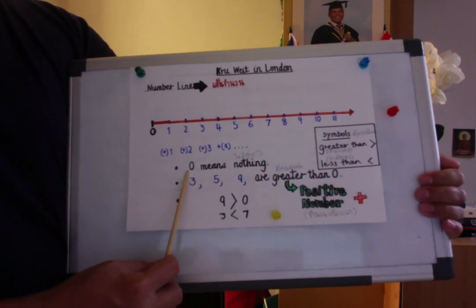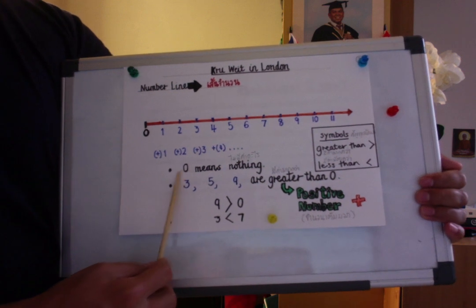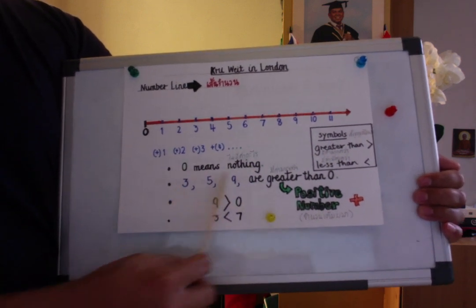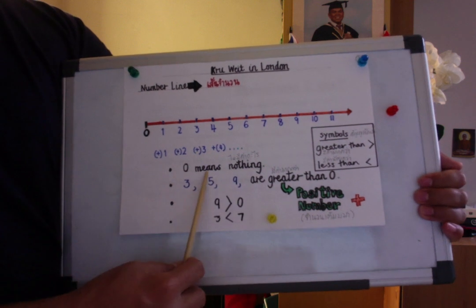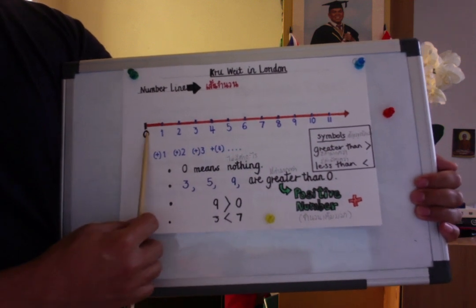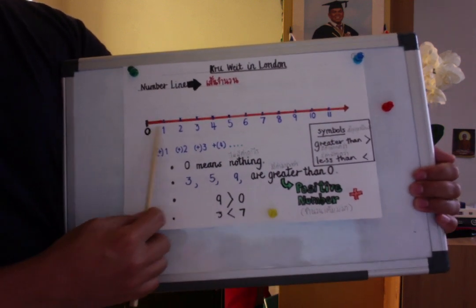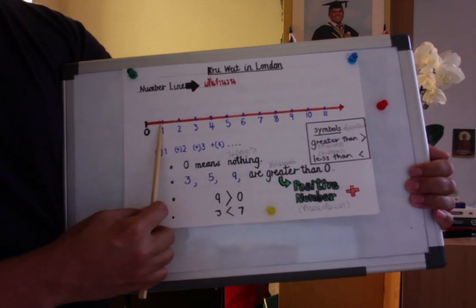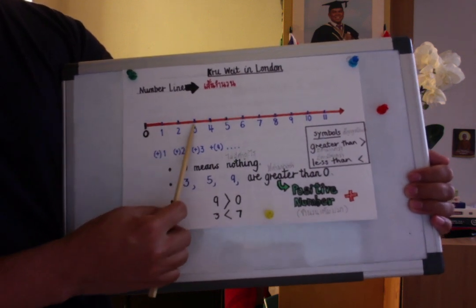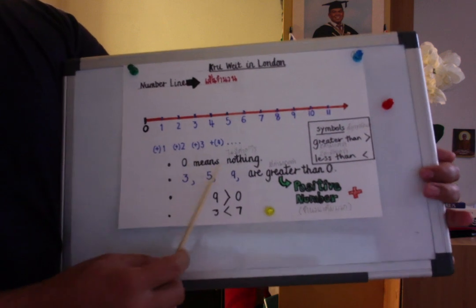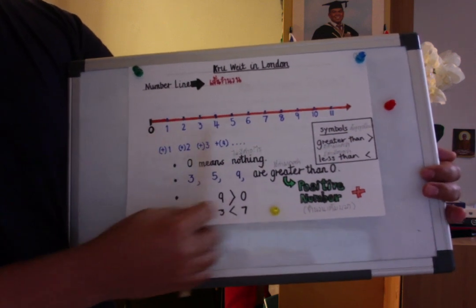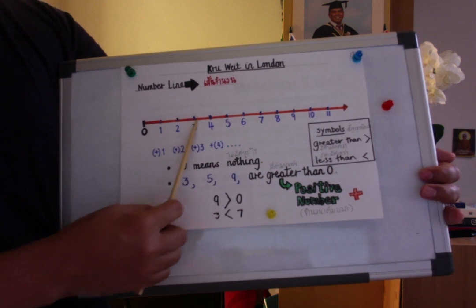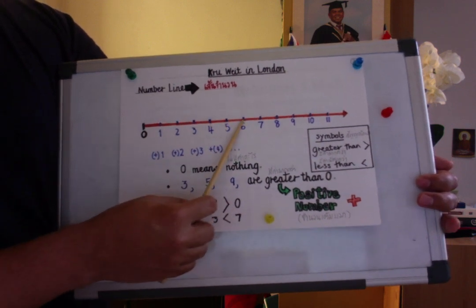Next, what does zero mean? Zero means nothing — zero has no value at all. Zero is the starting point, the origin of counting. From zero, the value increases by one to become one, then two, then three, then four. On the number line, the further to the right, the bigger the value of the number.